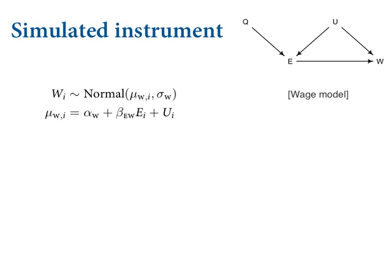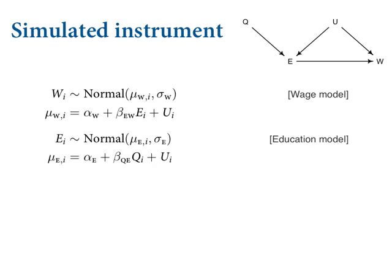The underlying model: we take the DAG and simulate from it. First there's a model for wages — wages are generated as a centered normal variable with some intercept, some effect of education (beta_EW), and then this confound U_i which isn't measured but is in the simulation. Then there's an education model — education has two arrows entering it, Q and U. There's a coefficient for the instrument effect and for U. The confounds could affect one variable positively and the other negatively — there's a simulation in the text where I flip the signs. For quarter of birth, I assert 25% chance of being born in the first quarter, and generate the confound as a z-score.